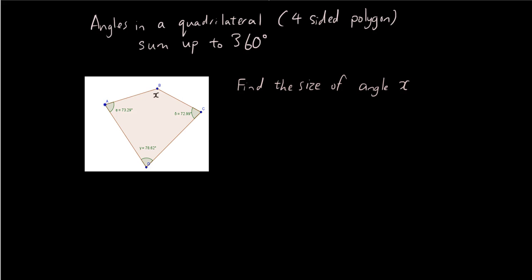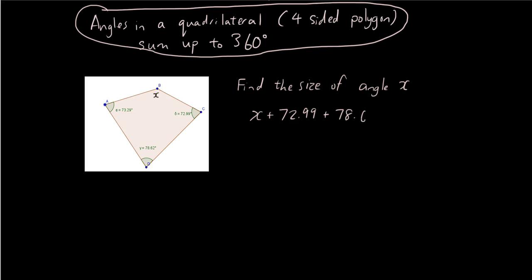So using this rule, angles in the quadrilateral sum up to 360 degrees. We're going to use that formula and say x plus 72.99 plus 78.62 plus 73.29 equals 360 degrees.